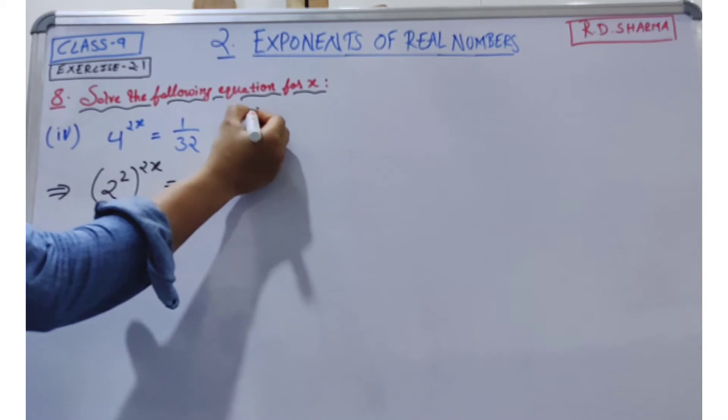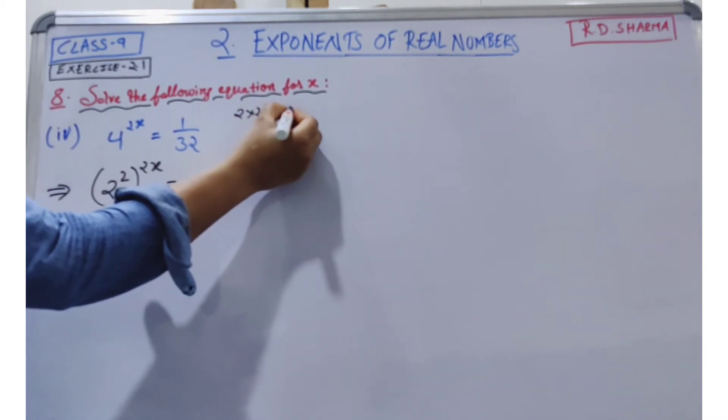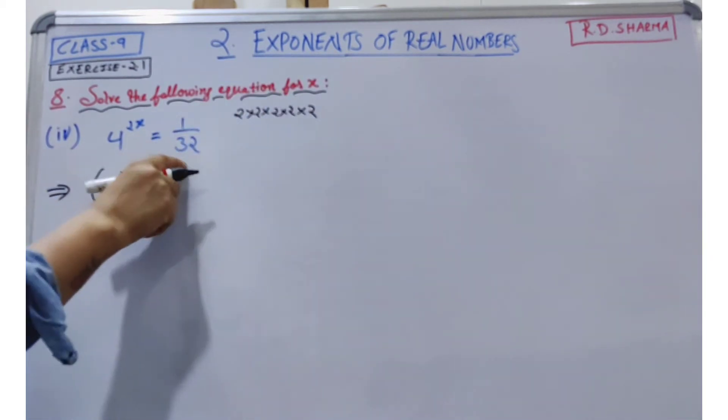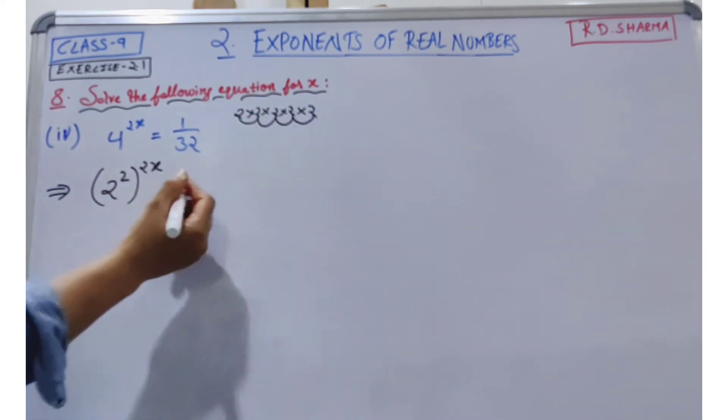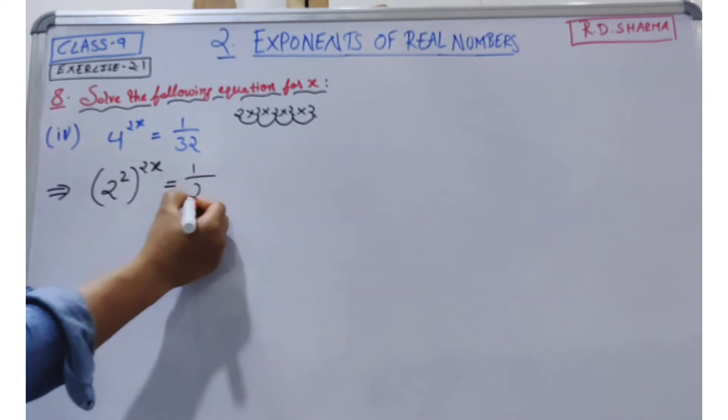If we have 2 to the power 5, what is it? 32. So how can we write it in the form of 2? 2 to the 4 is 16, and 2 to the 5 is 32. So we can write 1/32 as 2 to the power negative 5.